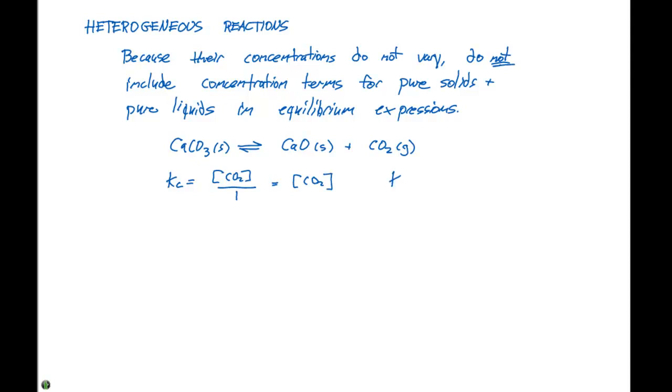The Kp for this particular expression is just the partial pressure of CO2. Remember that Kp equals Kc times RT to the delta N. Here, we have one mole of gas as a product, zero as a reactant, so it's Kc times RT to the first power.